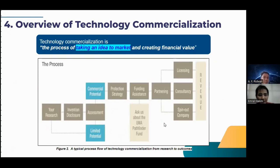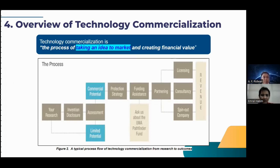Technology commercialization is the process of taking an idea to market and creating financial value. Below we can see the big picture of how your research can become revenue. First, your research goes to invention disclosure, then to assessment. From assessment, we will get two results: limited potential, which goes back to research, or commercial potential, which goes to protection strategy, then funding assistance and partnering, and then we can have options of licensing, consultancy, or spin-out company. These three options will generate revenue.